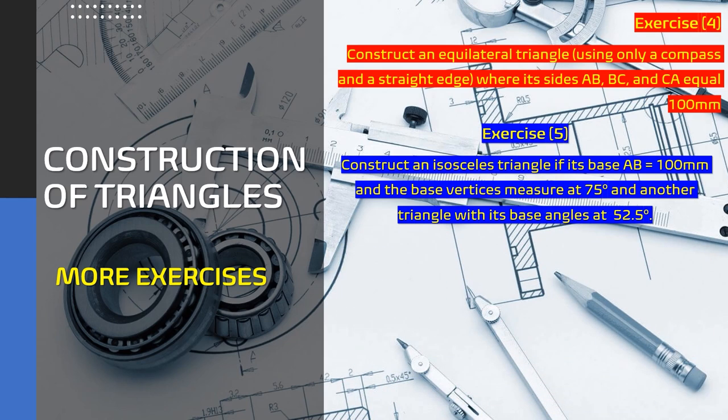Exercise 5. Exercise 5 challenges us to construct an isosceles triangle and we're giving some information regarding the geometry. So the base length, AB, equates to 100mm and the base vertices measure at 75 degrees and 52.5 degrees respectively.